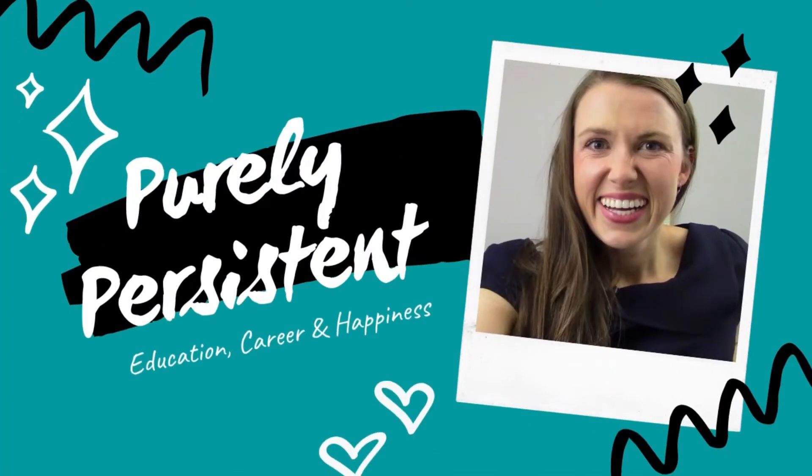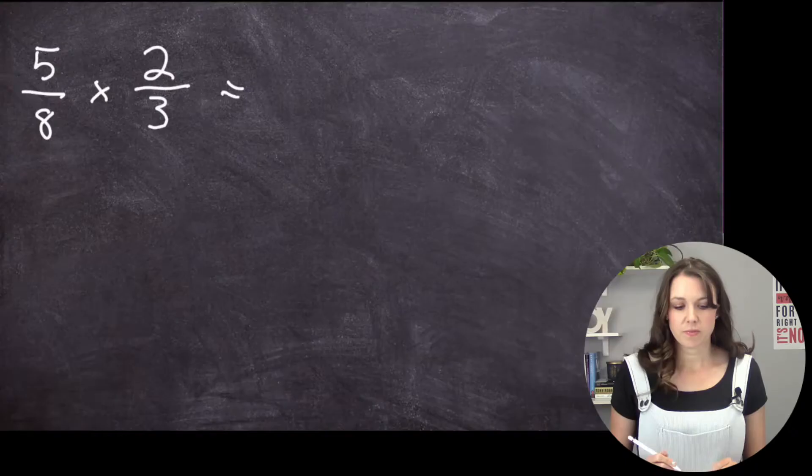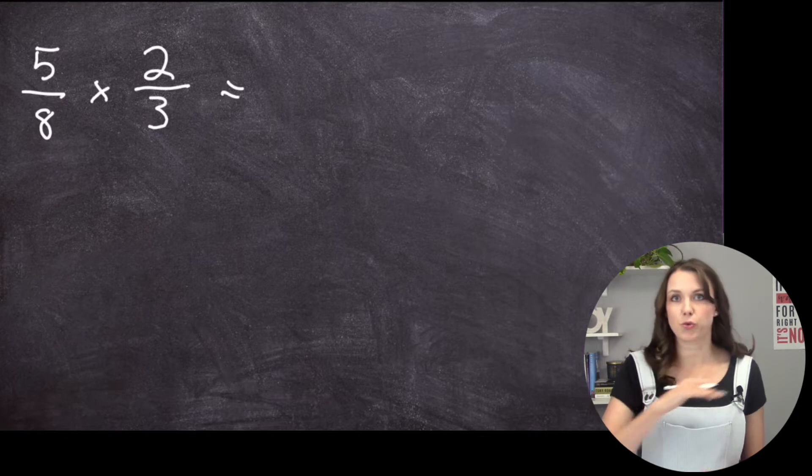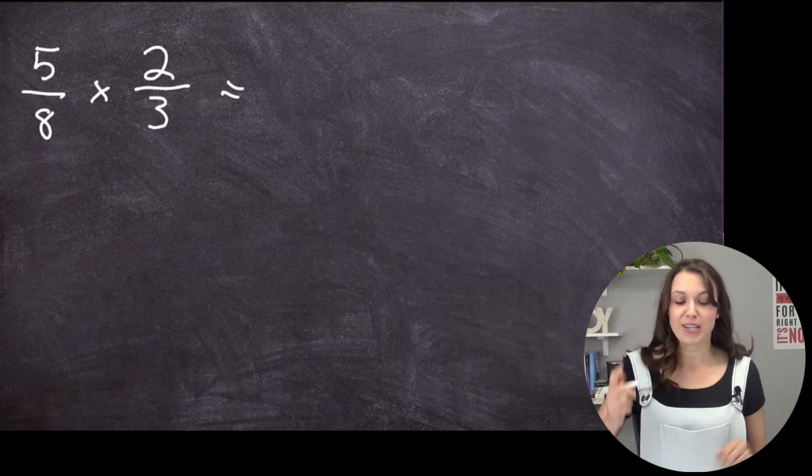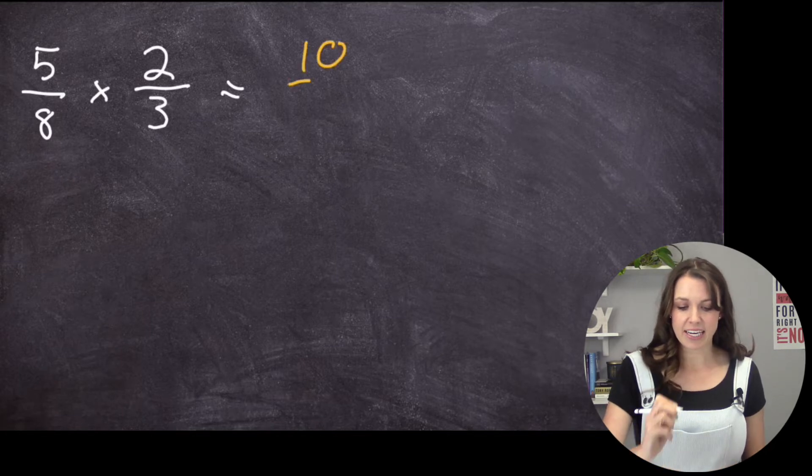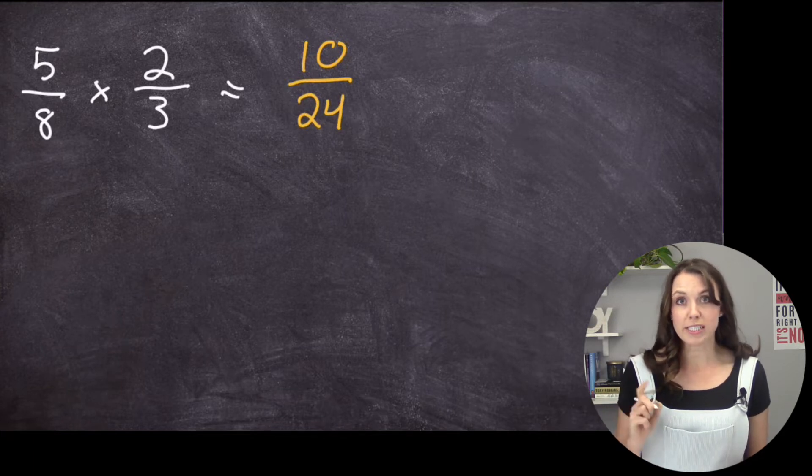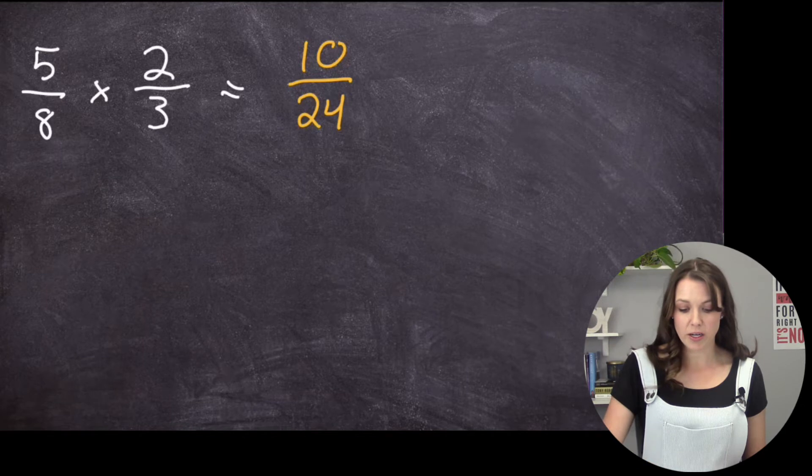Welcome to Purely Persistent. I'm Michelle. So now I have here 5/8 times 2/3. So again, I'm just going to multiply straight across. The number on the bottom doesn't have to be the same. So 5 times 2 is 10. And 8 times 3 is 24. Now,